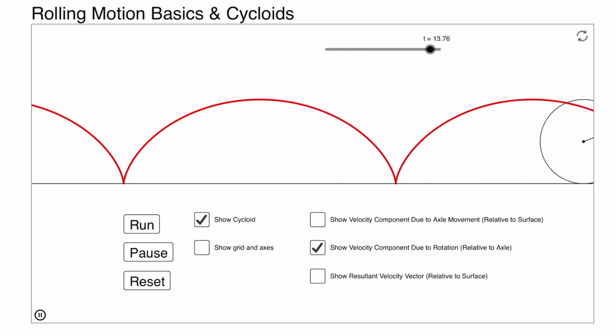When we combine these two, you can see how these two components keep changing their directions. When this red dot comes at the lowermost point, its velocity becomes zero. These two parts cancel each other, and when they are at the topmost point they add together, which gives you 2r omega or 2v₀.